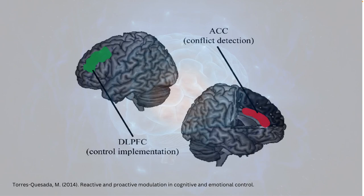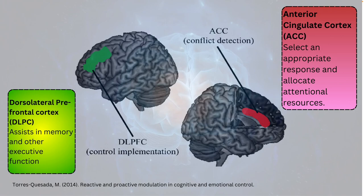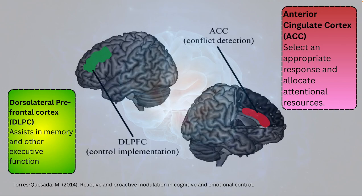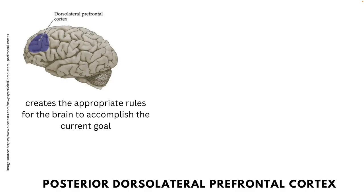More specifically, while both are activated when resolving conflicts and catching errors, the dorsolateral prefrontal cortex assists in memory and other executive functions, while the anterior cingulate cortex is used to select an appropriate response and allocate attentional resources.